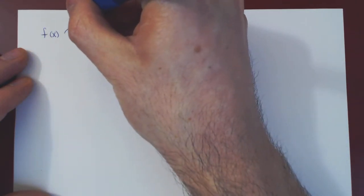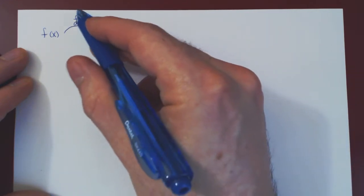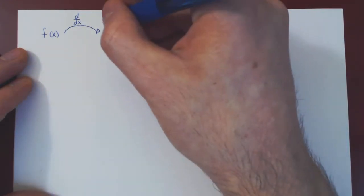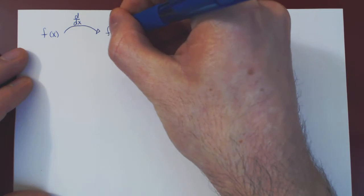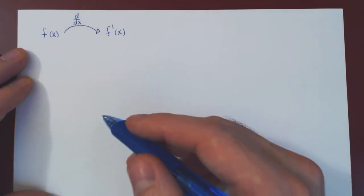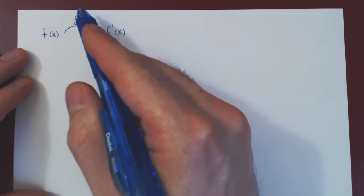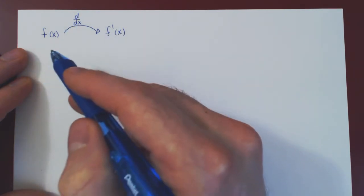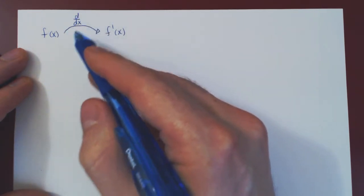We have the function f, we differentiate with respect to x — so d over dx is the action of differentiating the function — and we obtain the derivative f'. All of Differential Calculus was studying the derivative, its properties as a transformation, and its applications.